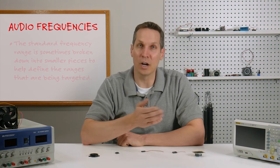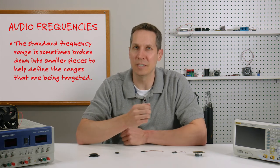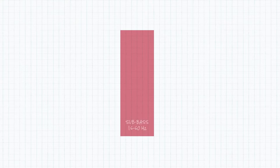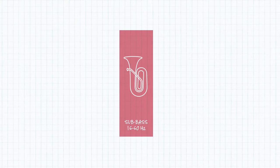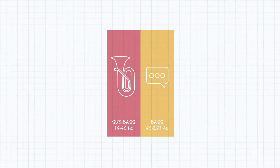To help with designing audio systems, the standard frequency range is sometimes broken down into smaller pieces to help define the ranges that are being targeted. Starting at the bottom, we have the sub-bass range, roughly 16 to 60 Hz, where you get your bass sounds like a tuba or bass guitar. Bass, from 60 to 250 Hz, is actually our normal speaking range, disregarding harmonics.